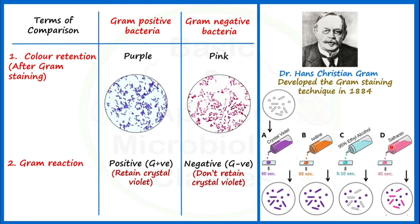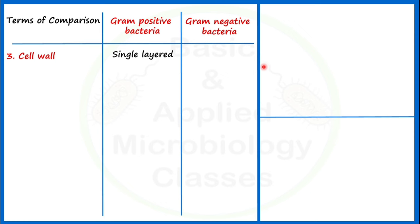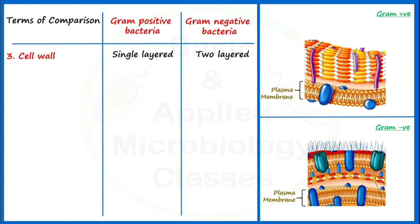Let's see the third point of difference: cell wall. In case of gram positive bacteria, the cell wall is single layered, and in case of gram negative bacteria, the cell wall is two layered or double layered. If we observe the cell wall structure of gram positive bacteria, the inner layer is the plasma membrane, and outside this, one layer is present made up of peptidoglycan. So there is a single layer of peptidoglycan constituting the cell wall of gram positive bacteria.